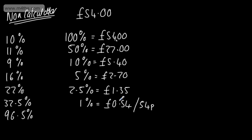So if we look at this pattern: 100% = £54, 10% = £5.40, 1% = 54p. Similarly, 50% = £27, 5% = £2.70, and you could go down to 27p for 0.5%.